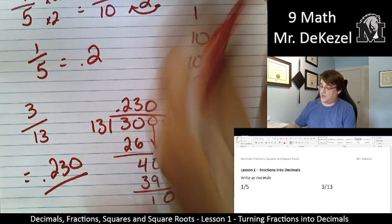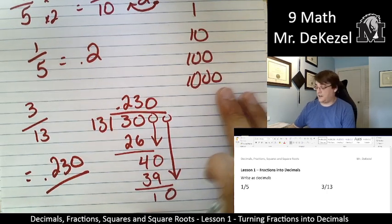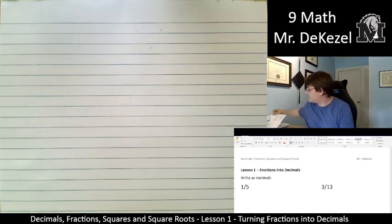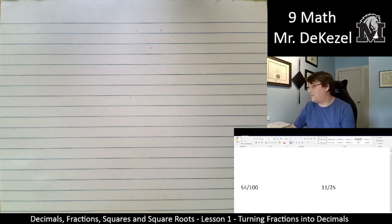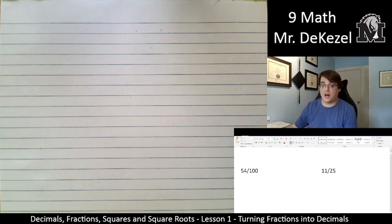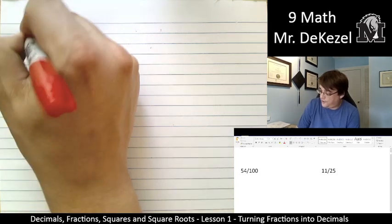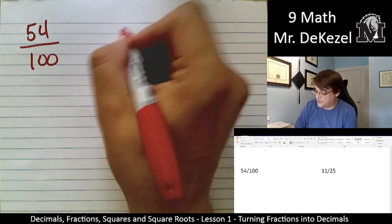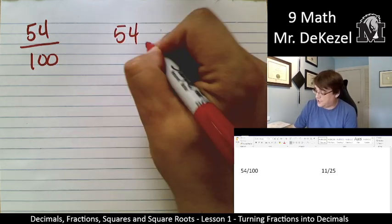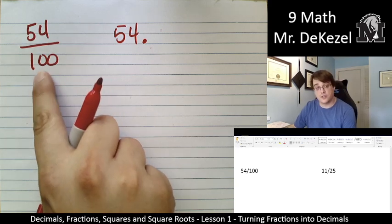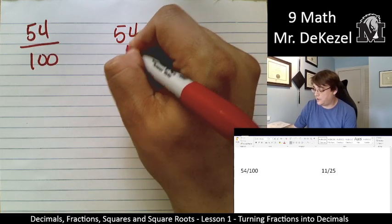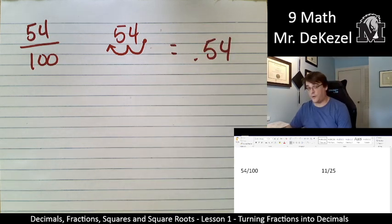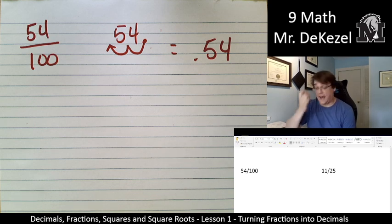So you can either turn it into a base, a denominator that has 1, 10, 100, or 1,000, or you can do long division. Let's do a couple more problems. First off, we have 54 out of 100. And that is an easy one because it already has a base that we like. So we started with 54, and the decimal would be here. Because we have two zeros, we are going to move the decimal over 1, 2 times to get 0.54.